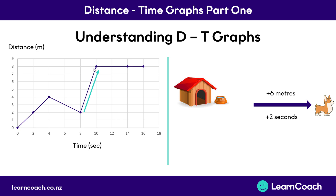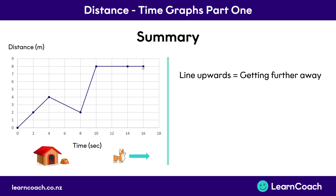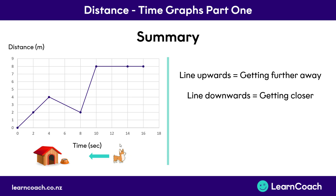When the line goes flat, Hank is not moving at all. He was 8 metres away, and 6 seconds later he's still 8 metres away — he hasn't gone further away or come closer; he's just been standing still. So to summarise: a line going upwards means the object is getting further away from its start; a line going downwards means it's getting closer; and a flat line means the object is staying still.